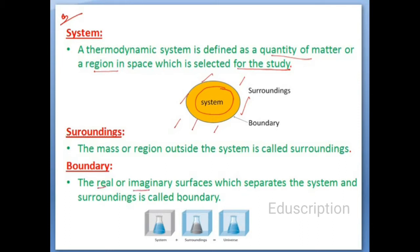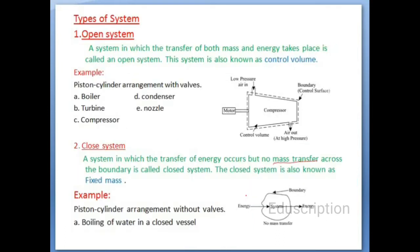An important point in thermodynamics: system plus surrounding equals the universe. So these are the system, surrounding, and boundary. Now we'll move on to the types of system.